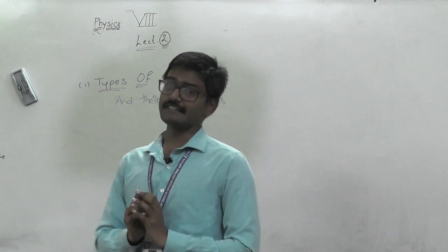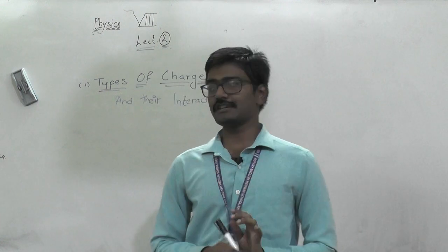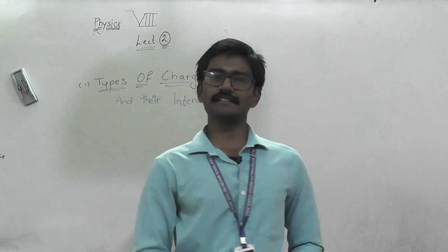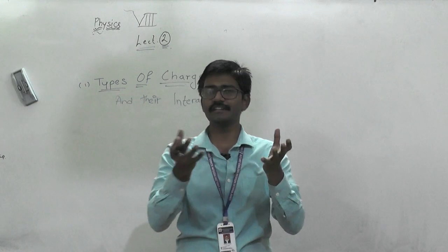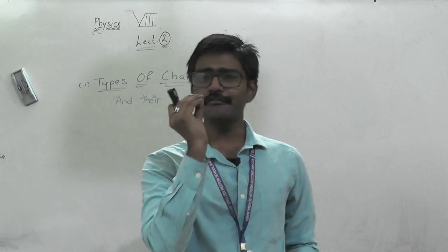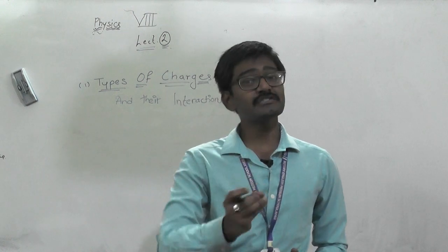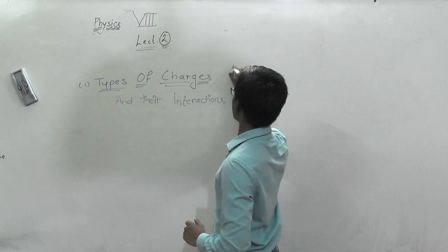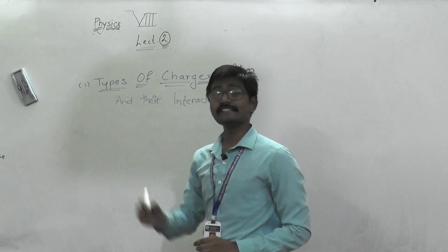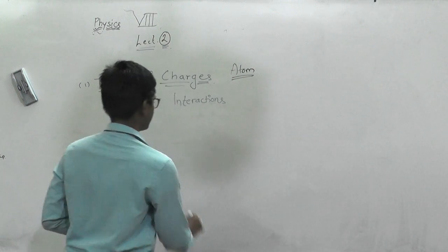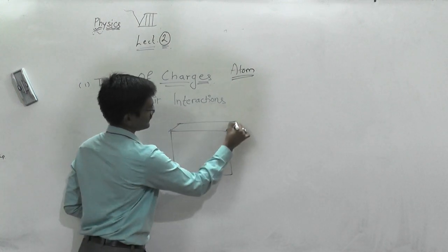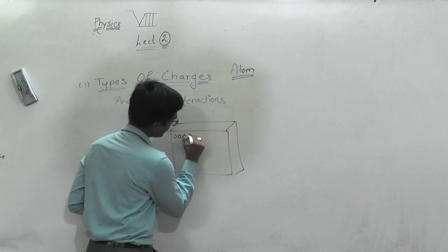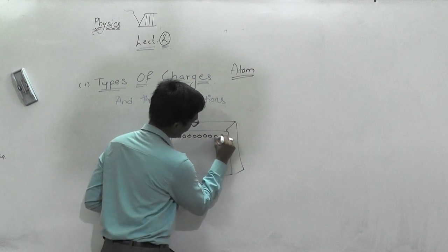Let us consider an experiment. Every material we want to study is made up of tiny tiny particles. Every big thing is made up of smaller things — likewise, every big material is made up of very tiny particles. The tiniest particle is called an atom. So this material is made up of atoms.